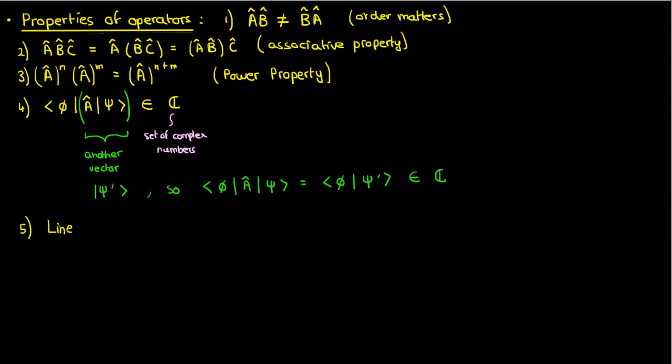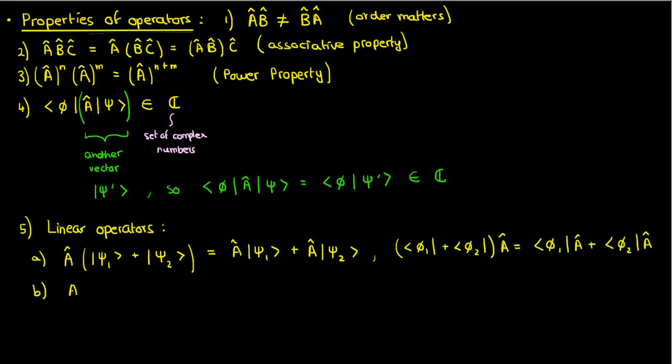There's a couple more points to be made. One of them is about linear operators. A linear operator is one that obeys the following rules. One is that an operator operating on the sum of multiple bras or kets is the same as the operator operating on them separately. The other rule is the constant multiple property.